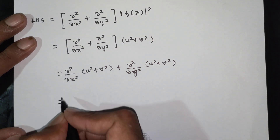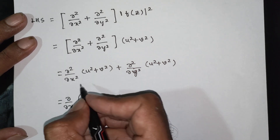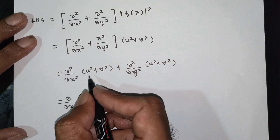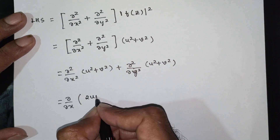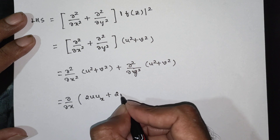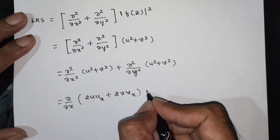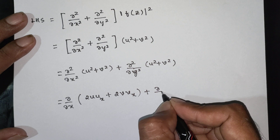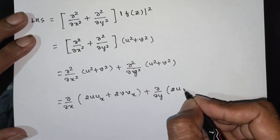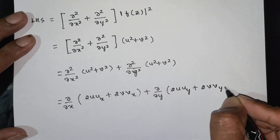Differentiating u² + v² with respect to x gives 2u·ux + 2v·vx. Differentiating with respect to y gives 2u·uy + 2v·vy.